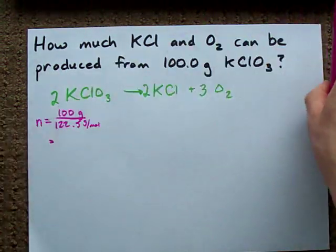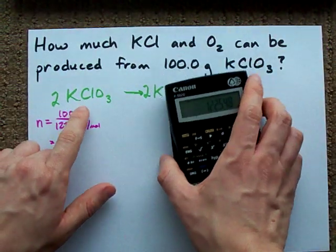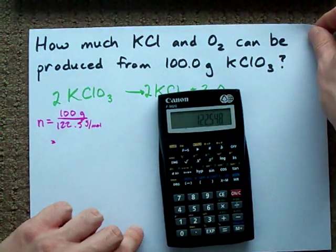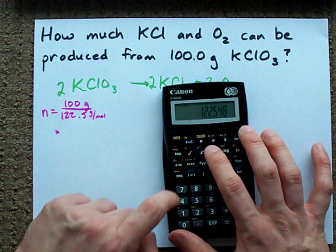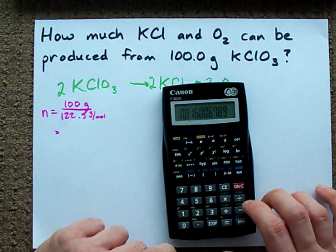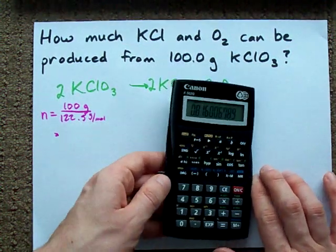So, here we go. The number of moles of potassium chlorate that we have, since we start with 100 grams and the molar mass is 122, is 0.816 moles.